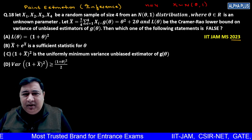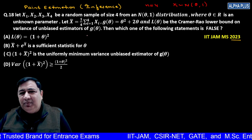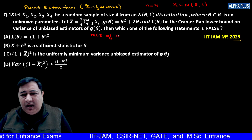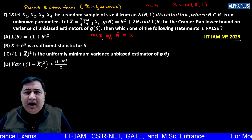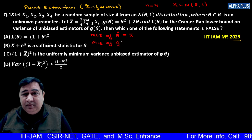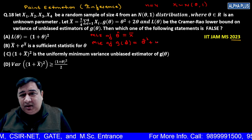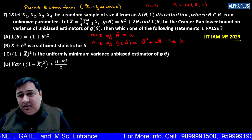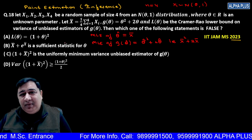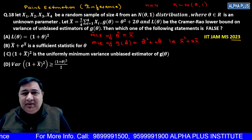The parameter is theta, X-bar is the estimator for theta. The MLE of theta cap is equal to X-bar. By invariance property, the MLE of g(theta) is equal to theta cap square plus 2 theta, that is X-bar square plus 2 X-bar. By invariance property, theta cap MLE is g of X-bar.